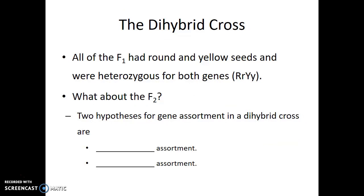What we saw in this genetic cross is that all of the F1 individuals had round and yellow seeds. This makes sense if we consider that we're taking a true breeding dominant plant for two different traits and crossing it to a true breeding recessive plant. Because of Mendel's law of segregation, the first parent — true breeding for round and yellow seeds — can produce one type of gamete: a gamete that has a capital R allele and a capital Y allele. Each gamete will have one allele for each gene.